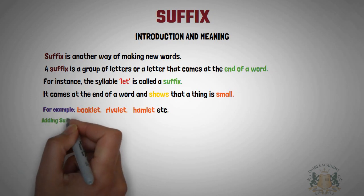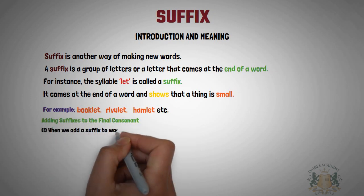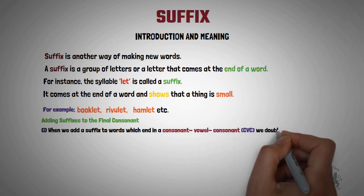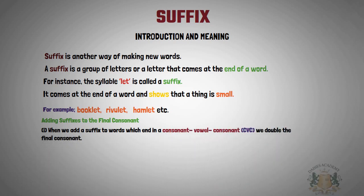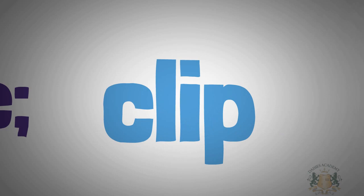Now, adding suffixes to final consonants. Rule number one: when we add a suffix to a word which ends in a consonant-vowel-consonant pattern, we double the final letter. In the spelling of words, you'll notice that some words have the consonant-vowel-consonant pattern. When you find such a word, you double the last letter.